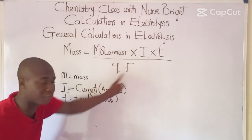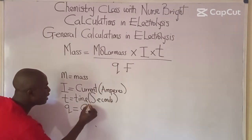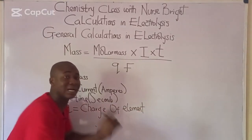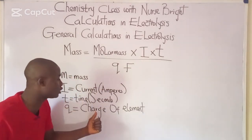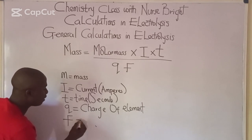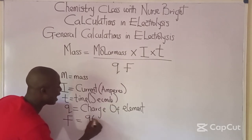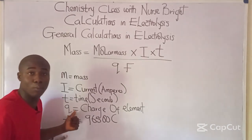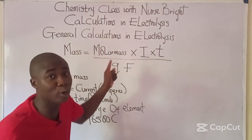Moving to q and F: the symbol q here means charge of the element — this is different from the capital Q we saw earlier, which is quantity of electricity. This small q is called charge of element. F is a constant called Faraday's constant, which is 96,500 coulombs.